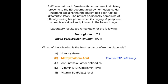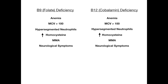Before showing you why A, C, D, and E are incorrect, the proper place to begin is to talk about the differences between a B9 and a B12 deficiency. In both a B9 and a B12 deficiency, there are many shared common features. They both result in anemia — specifically a macrocytic megaloblastic anemia — with a mean corpuscular volume greater than 100. In both cases, you'll see hypersegmented neutrophils on a peripheral smear.